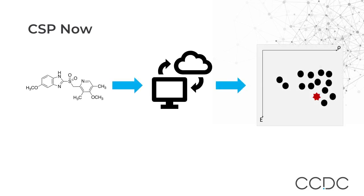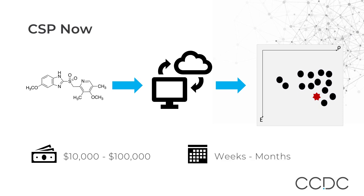Crystal structure prediction is currently a costly computational exercise. The investment of time and resources can involve costs that run to between $10,000 and $100,000 for a single landscape. The elapsed time for such a study can be anything from 2–3 weeks to 2–3 months. Due to the computational complexity, studies are limited to molecules of a moderate size, though as computational resources become cheaper and more readily available, more challenging systems are becoming tractable.